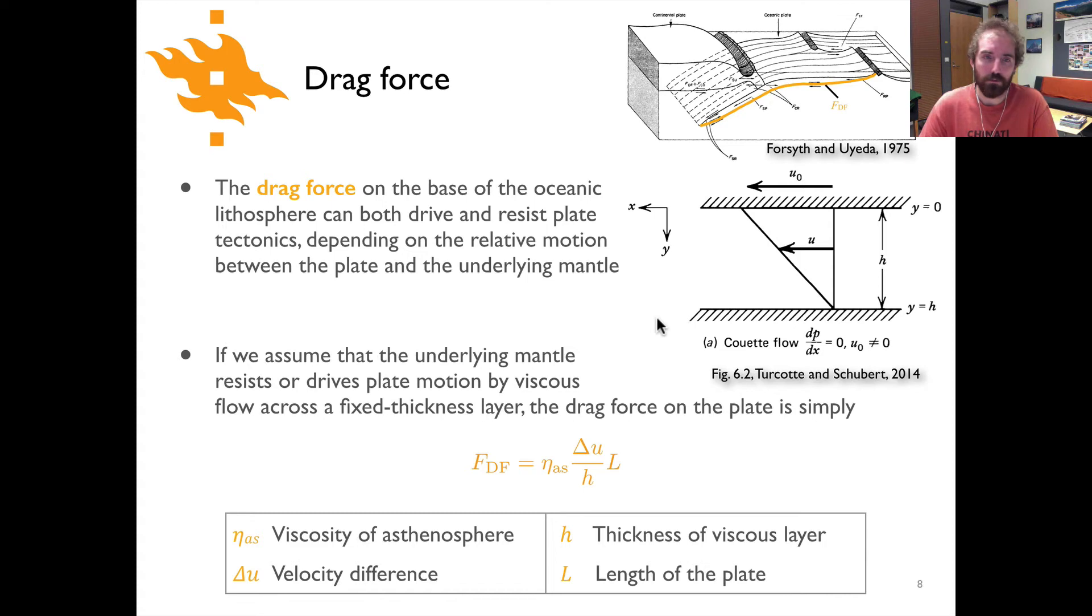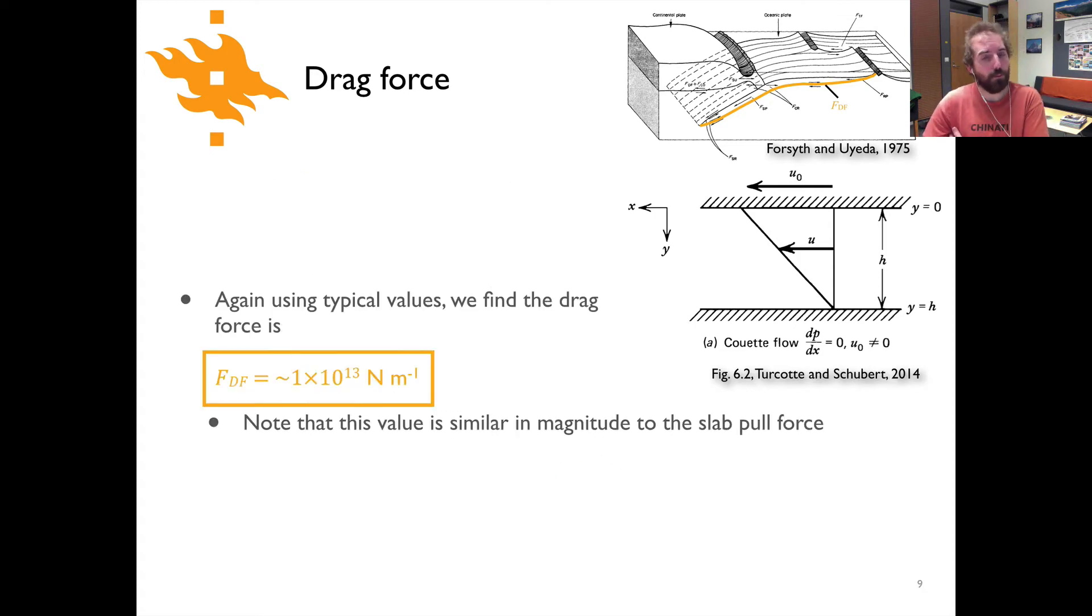And if we put in our typical numbers here what we see is that we get a drag force that's on the order of 1 times 10 to the 13 newtons per meter, which is again comparable to the size of the slab pull force. So drag force is pretty significant, the ridge push is maybe less significant, and slab pull is certainly a big one.